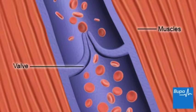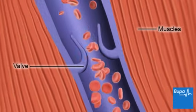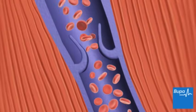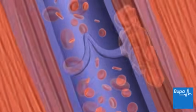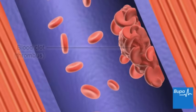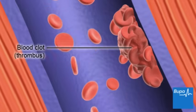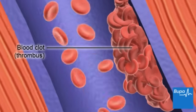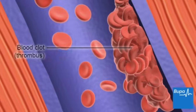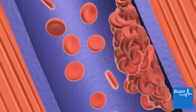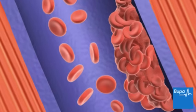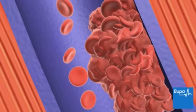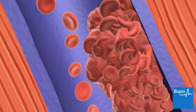The veins also have valves that prevent the blood from flowing back towards the feet. DVT is where a blood clot, or thrombus, forms in a deep vein. It partly or completely blocks the flow of blood through the vein. A blood clot can form if a vein is damaged, if the flow of blood in the vein slows down, and if the blood has a higher than normal tendency to clot.